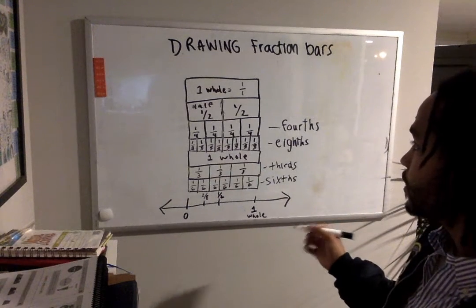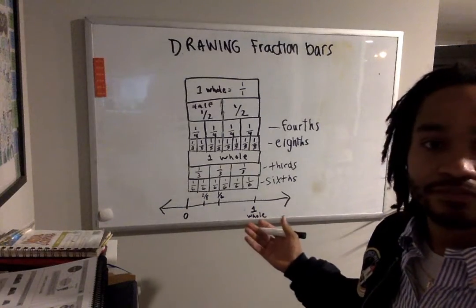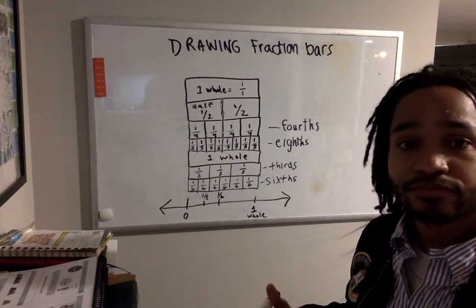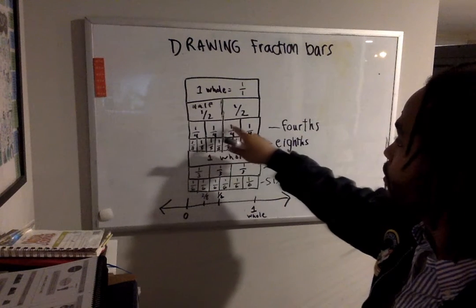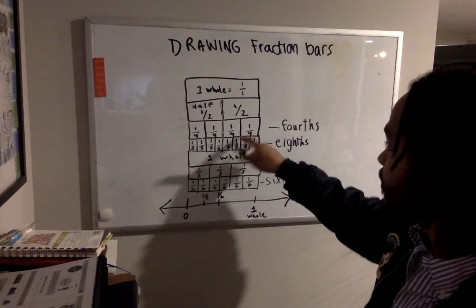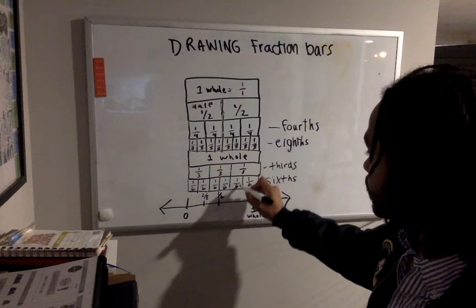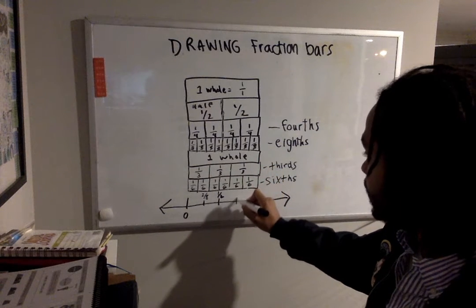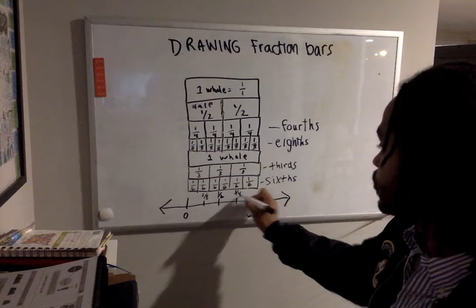Let's say I want to find out where three fourths are. You can try this at home. One fourth, two fourths, three fourths. I'm looking at this line where it ends. And I'm gonna kind of go down. I'm gonna go down. And then I'm making a line on my number line. And then I'm going to label it. Three fourths.